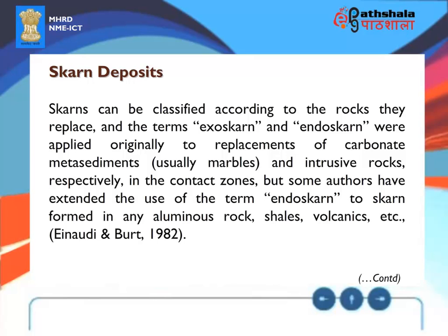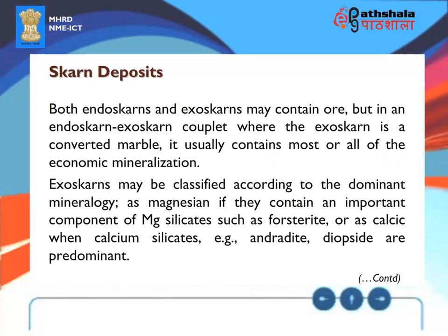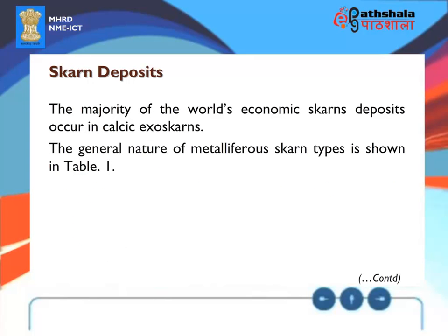Some authors have extended the use of the term endoskarn to skarns formed in any aluminous rock — shales, volcanics, etc. (Einaudi and Burt, 1982). Both endoskarn and exoskarn may contain ore, but in an endoskarn-exoskarn couplet where the exoskarn is a converted marble, it usually contains most or all of the economic mineralization. Exoskarns may be classified according to dominant mineralogy as magnesian — if they contain an important component of magnesium silicates — or as calcic when calcium silicates such as andradite and diopside are predominant. The majority of the world's economic skarn deposits occur in calcic exoskarns.